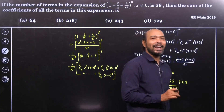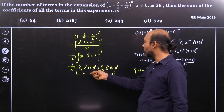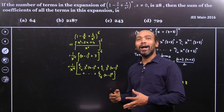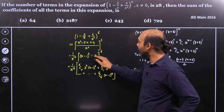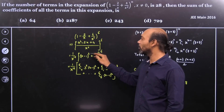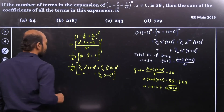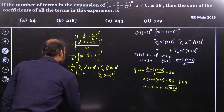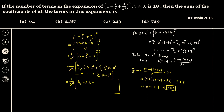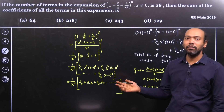If we expand all those terms — x minus 1 whole squared, to the power 4, and so on — we see that the maximum power is x to the power 12. That's because x minus 1 whole squared, raised to the power 6, gives us x to the 12th power. So we can write this as 1 over x to the power 12 times a0 plus a1 x plus a2 x squared and so on.